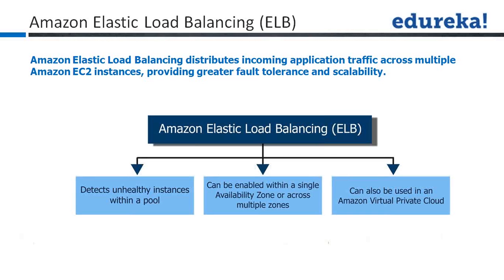Amazon Elastic Load Balancing has several features. The first one is it detects unhealthy instances within a pool. Within your same project, if you have taken 10 EC2 instances, it checks how many are up and running. The instance health check is applicable to all instances under your pool. It can be enabled within a single availability zone or across multiple zones.